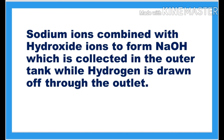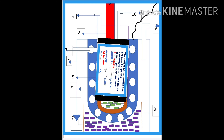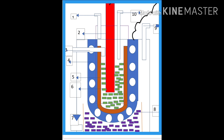On the outer surface of the cathode, sodium ions combine with the hydroxide ions released due to the reduction of water and form sodium hydroxide. The steam blown during the process keeps the electrolyte warm and helps to keep the perforations clear. The reactions that occur at the electrodes are shown here, along with the Nelson's cell schematic diagram.